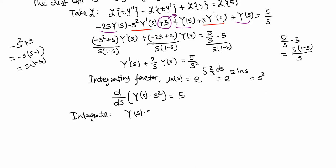Integrating both sides, we get s²·Y(s) = 5s + C. Dividing both sides by s² gives Y(s) = 5/s + C/s².